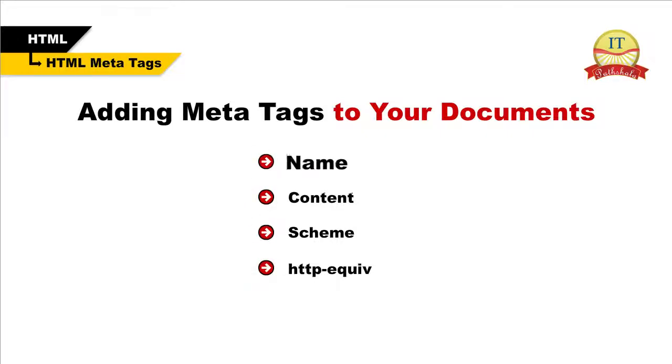Name: this attribute specifies the name of the property. Its examples include keywords, description, author, revise, generator, etc.